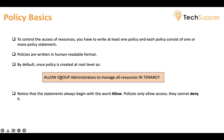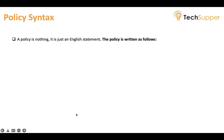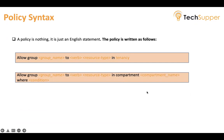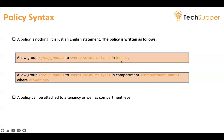Let's understand how we write a policy. The syntax is a single English statement written as: 'allow group <group-name> to <verb> <resource-type> in tenancy' or 'in compartment <compartment-name>.' If we want to give multiple groups, we can comma-separate them. We can also write conditions: 'allow group <group-name> to <verb> <resource-type> in compartment <compartment-name> where <condition>.' The where condition is optional. A policy can be attached to a tenancy (the root compartment) or a child compartment.